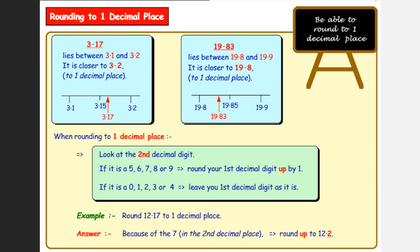We've got 3.17. 3.17 lies between 3.1 and 3.2. If we look at our diagram, we can see that it's above 3.15, it's closer to 3.2, so that's the answer.